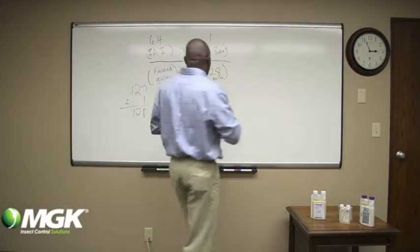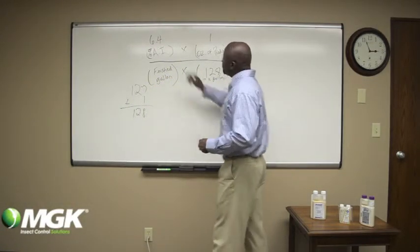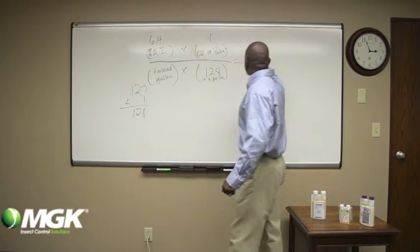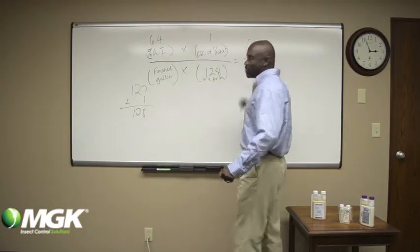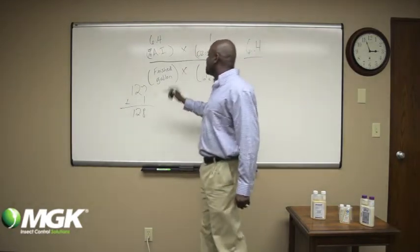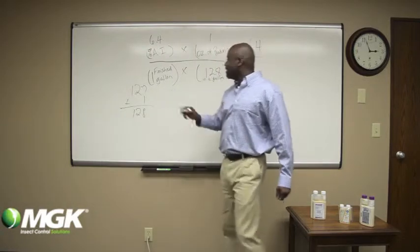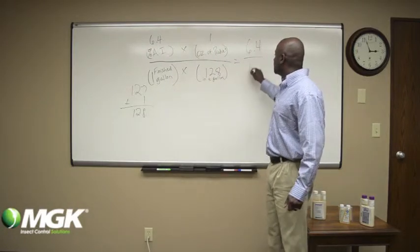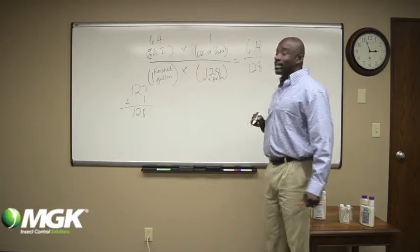When you do the calculations, 6.4 times one equals 6.4. Here, one gallon times 128 will give you 128.